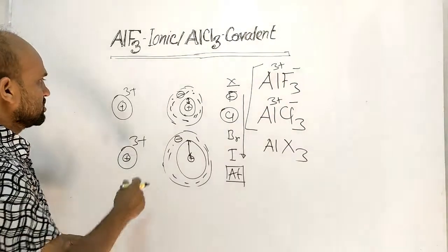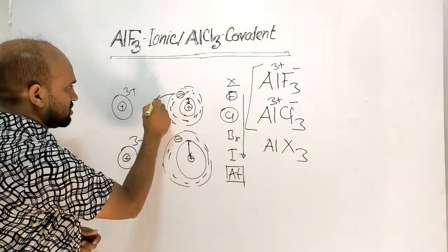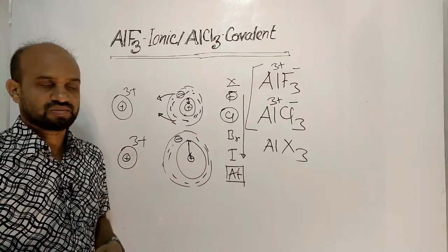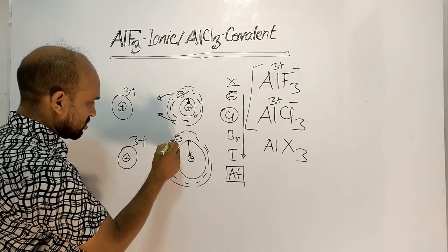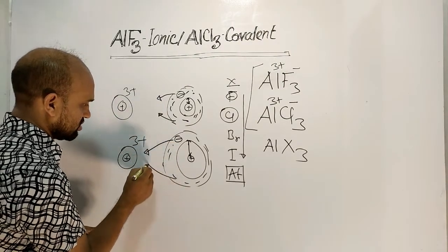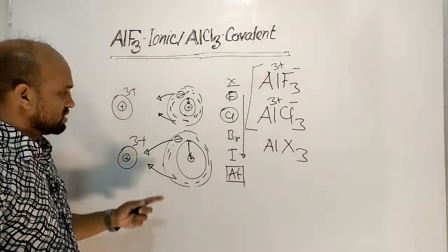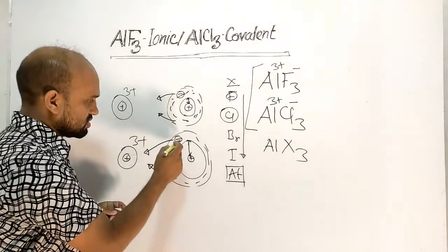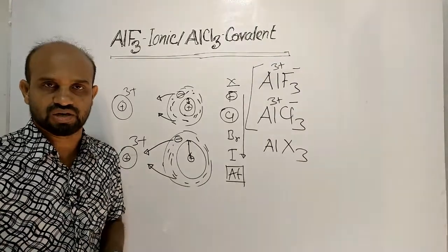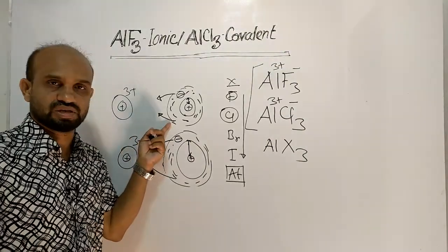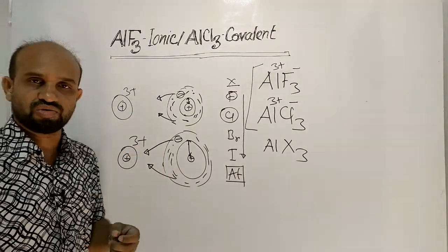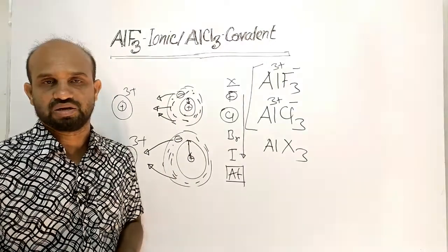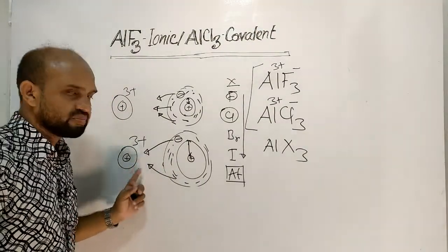As a result, this electron cloud in the fluoride ion is attracted by the aluminium 3+ only to a very limited degree. In the chloride ion, since the electron cloud is loosely bonded to the nucleus, the electron cloud is attracted by the aluminium cation to a much greater extent. Therefore, in the case of chloride ion, polarization happens on a large scale, but in the case of the fluoride ion, polarization is very less.